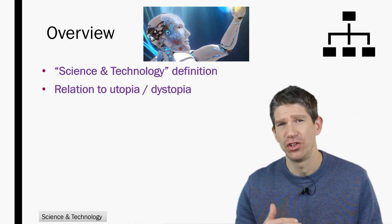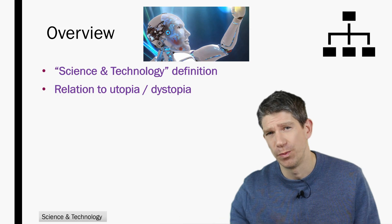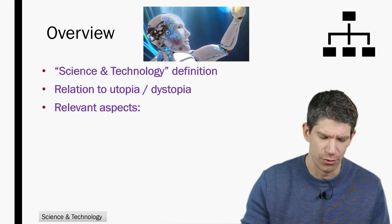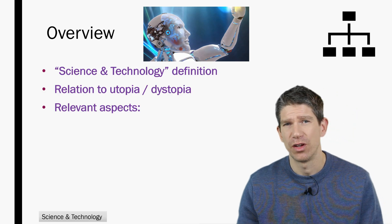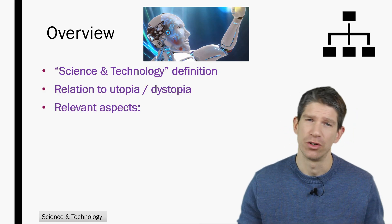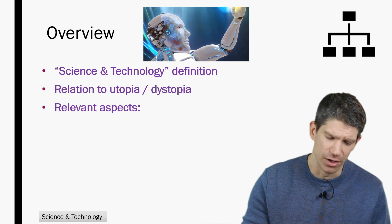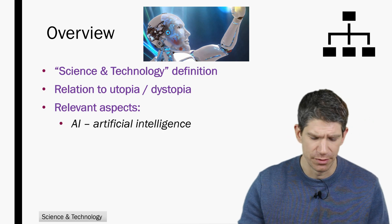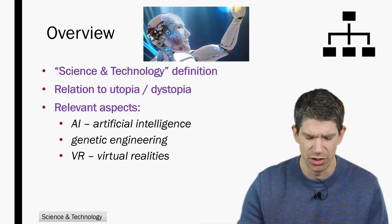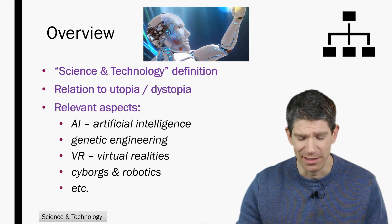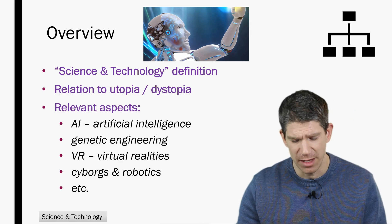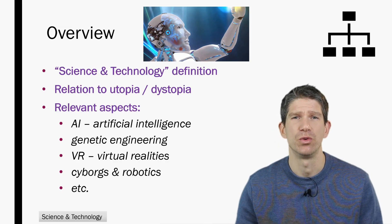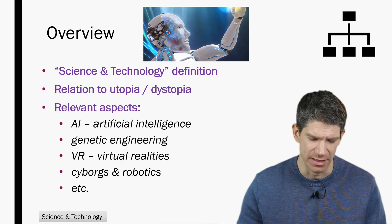Then I'll discuss the relation to utopia and dystopia, the other topic that also plays a role. And then I'll focus on four different aspects or technologies that I think are very important at the center of this debate: AI or artificial intelligence, genetic engineering, virtual realities, and cyborgs and robotics. There might be other aspects you could add, but I really think that this is the focus.